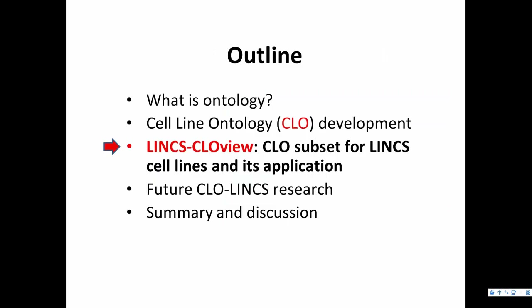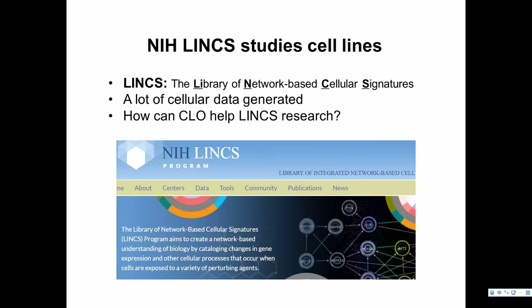That covers the cell line ontology development history. Now let's go to LINCS. LINCS — the Library of Network-Based Cellular Signatures — has been focusing on cellular responses a lot. When cells and cell lines are treated with different perturbations and drugs, you look for cell responses and signatures to build a network library. The question is how cell line ontology can help, as cell lines are clearly important in LINCS.